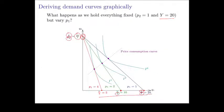If the price goes up to 2, you can only buy 10. If the price goes up to 4, you can only buy 5. So by varying the price of good 1, we move this corner of the budget line either to the left or to the right. But this other corner stays put.